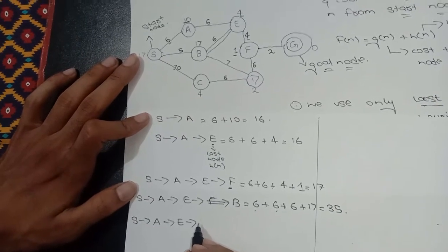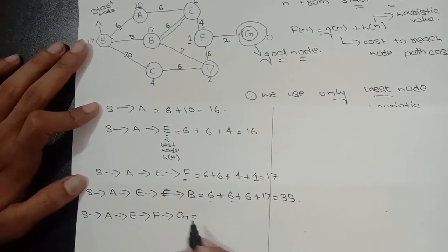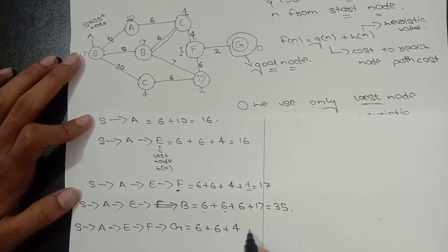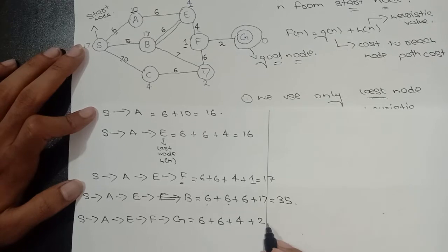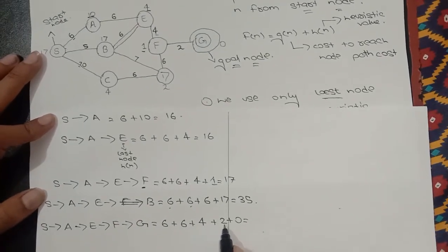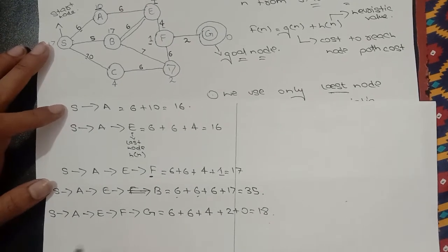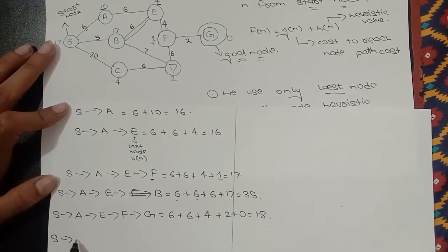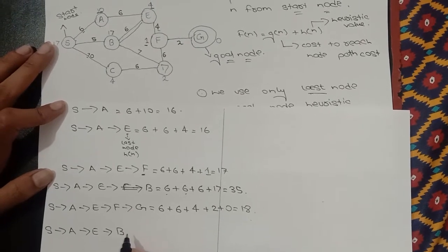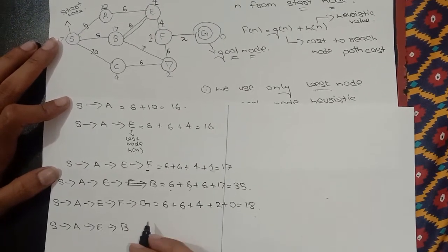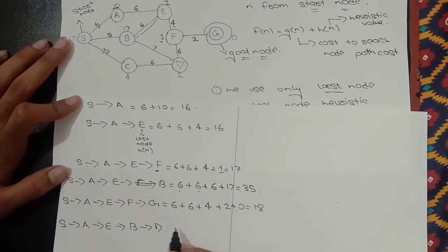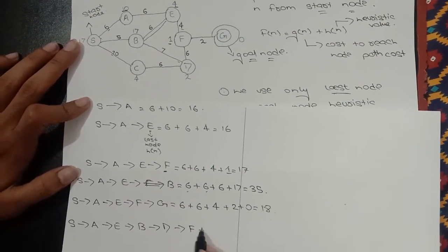Now we will see the direct path from S to G, since S is our starting node and G is our goal node. S to A to E to F to G: 6 plus 6 plus 4 plus 2 plus G's heuristic value is 0. So 6 plus 6 is 12, plus 4 is 16, plus 2 is 18, plus 0 is 18. So this path has a value of 18.